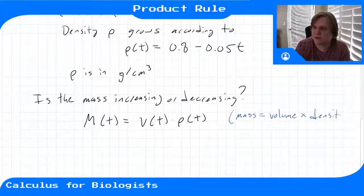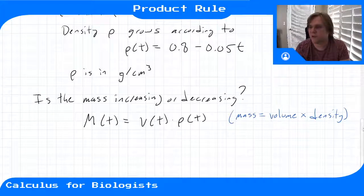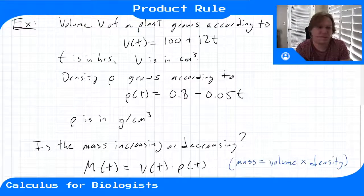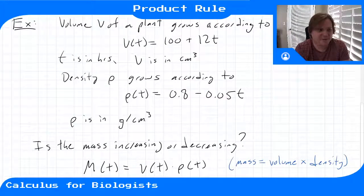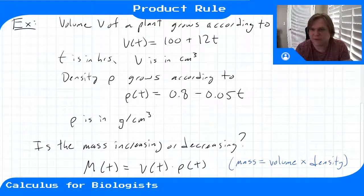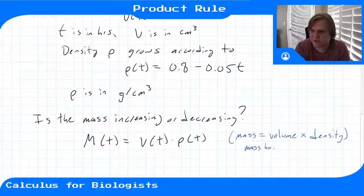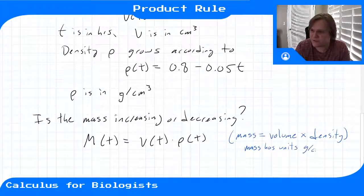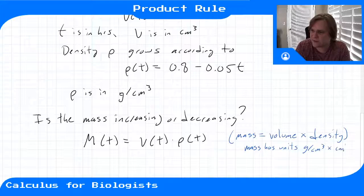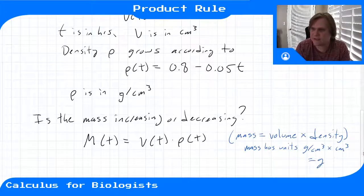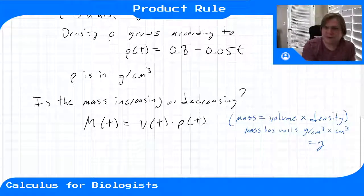Recall that mass is volume times density, and you can check your units. Volume was centimeters cubed, density is grams per centimeters cubed. So if you multiply these together, mass will have units of grams. So that is indeed a mass.